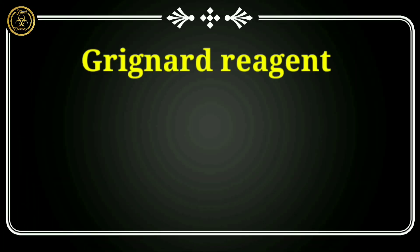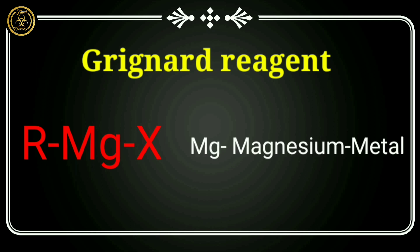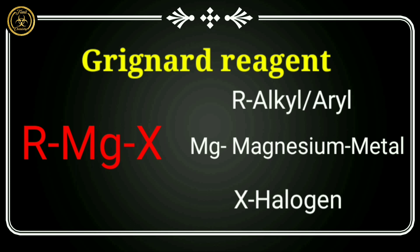Grignard Reagent. Grignard Reagent consists of Magnesium from the Halogen family — R, Alkyl family, Aryl family — to form a Grignard Reagent.